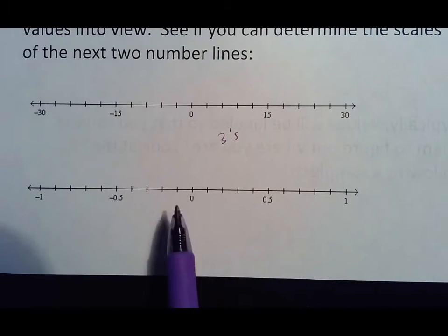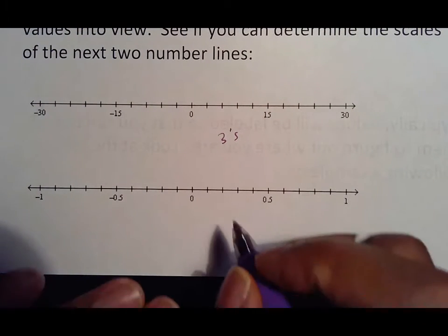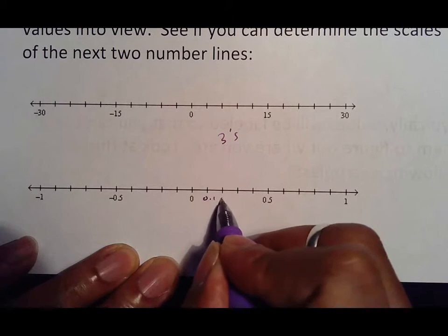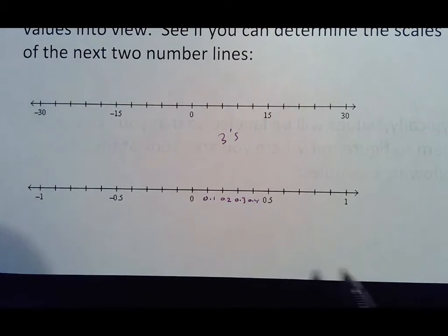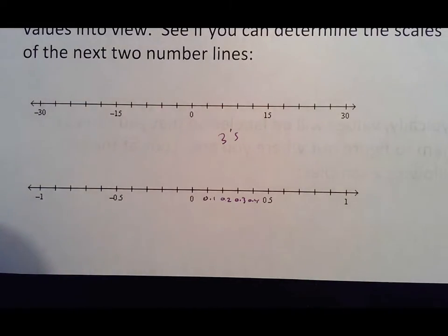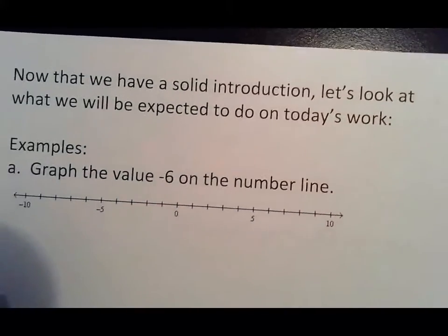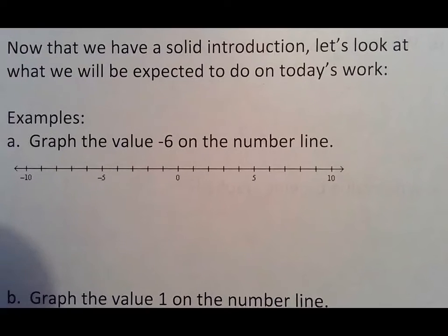This one actually has a decimal in it. I think it's counting by: one, two, three, four, five — so this would be 0.1, 0.2, 0.3, 0.4. Yes, decimals do exist and they will be popping up more and more as our year moves forward. That would be something you have to consider as you move through this material. Now that we have a solid introduction, let's look at what we're expected to do in today's work.